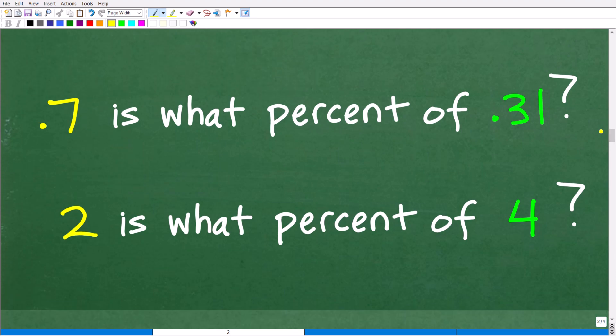So 0.7 is what percent of 0.31. Now let's suppose you're kind of confused about what should I do here? Well, a great technique you can use in math, if you're not really understanding the question, is to replace values with simpler numbers and see if you can kind of understand the problem a bit better. So 0.7 is what percent of 0.31. Let's just kind of change out these values for some easier numbers. What if I gave you this question? 2 is what percent of 4? You don't even need a calculator to answer this question. Come on now.